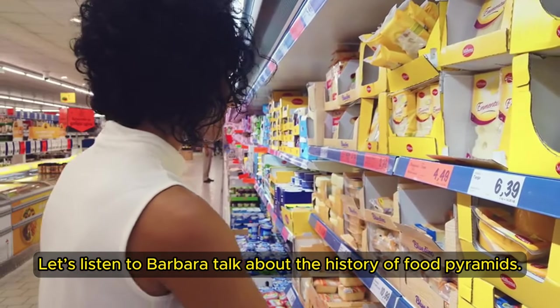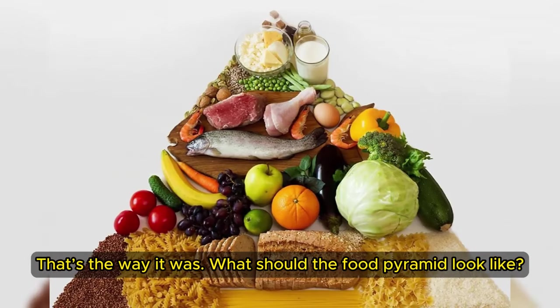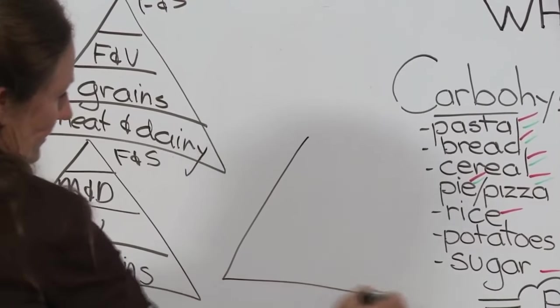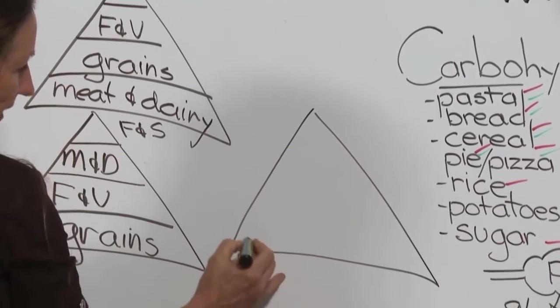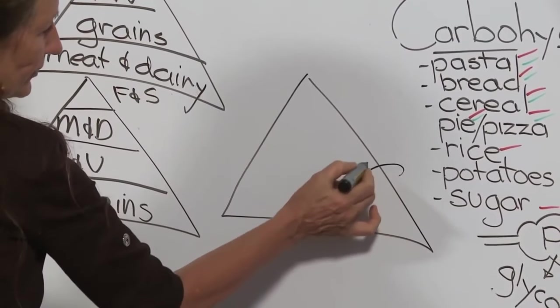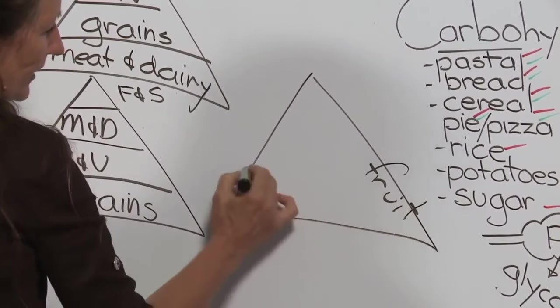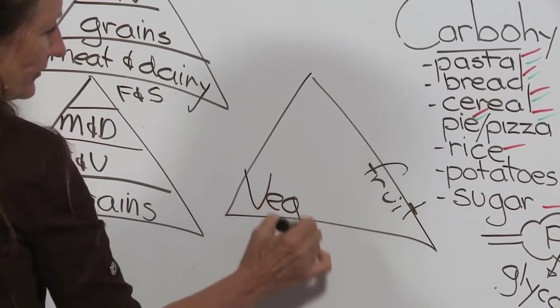Let's listen to Barbara talk about the history of food pyramids. That's the way it was. What should the food pyramid look like? What should our triangle be? Fruit and vegetables. For some people the fruit has to be reduced, so we'll put fruit on sideways, but vegetables, no limit on the vegetables.